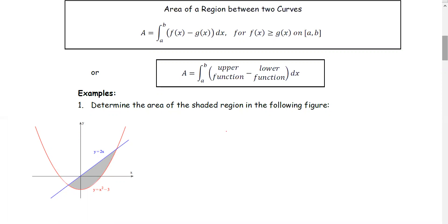You can see that line y equals 2x is above the curve y equals x squared minus 3 for the entire region.